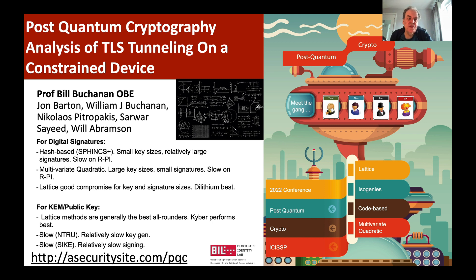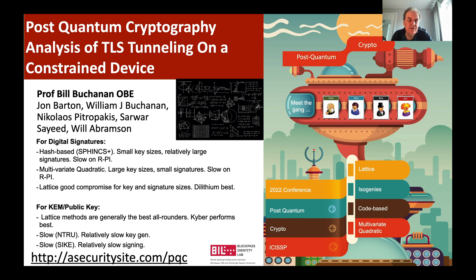In conclusion: hash-based methods produce small key sizes for digital signatures but relatively large signatures overall and are slow on the Raspberry Pi. Multivariate methods have large key sizes but small signatures and are also slow on the Raspberry Pi. Lattice methods are a good compromise for both key and signature sizes, with Dilithium being the best for signatures. For key exchange, lattice methods are the best performers and Kyber performed best on the Raspberry Pi. Slow methods included NTRU for key generation and isogeny-based methods. All methods are implemented in Golang and Rust, with all results provided there.